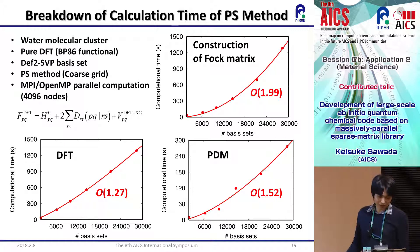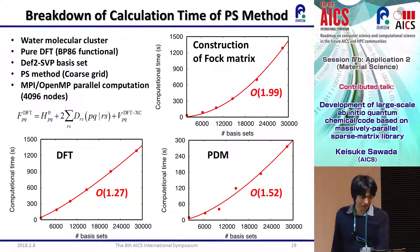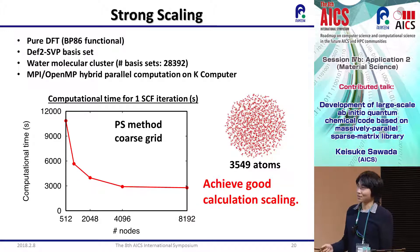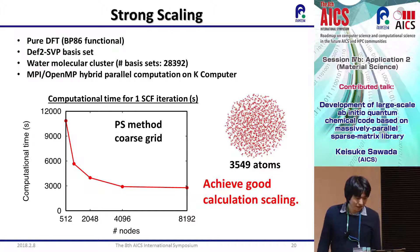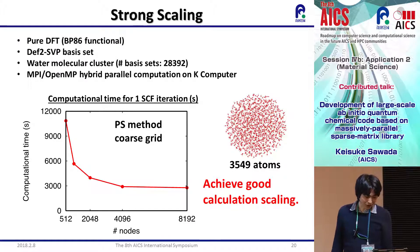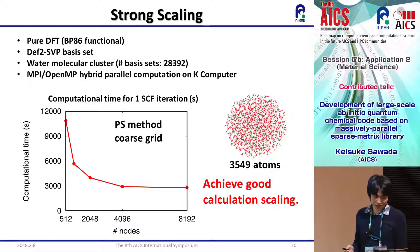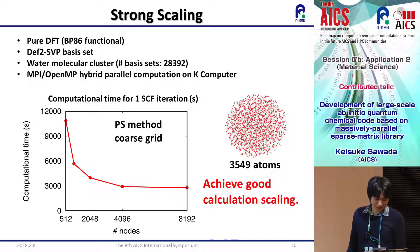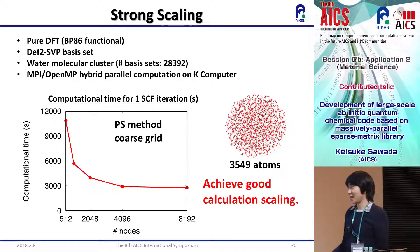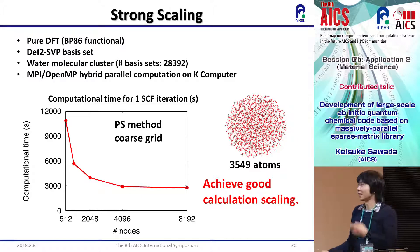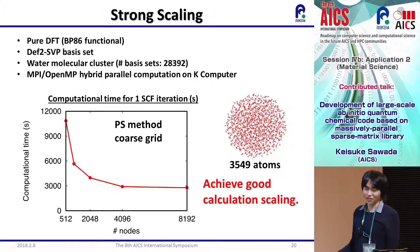We analyzed the breakdown of calculation time for the PS method using 4,000 basis sets of a water molecule cluster. The construction of the Fock matrix is nearly N-squared order with respect to basis sets. The DFT part is nearly order-N in scaling, and the PDM part is less than order N-squared. For strong scaling, using about 30,000 basis sets, relatively good scaling is achieved, but at 8,000 basis sets computational time tends to saturate, likely due to small system size. A larger molecular system would improve scaling.